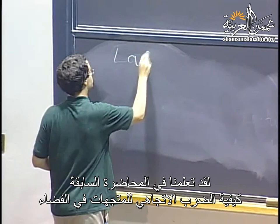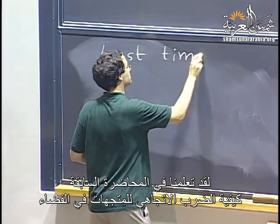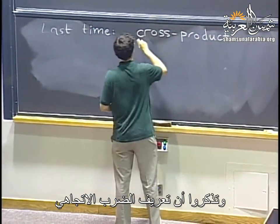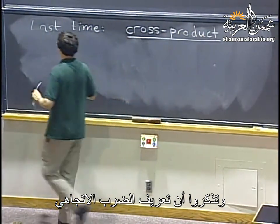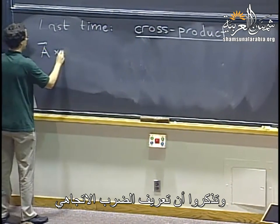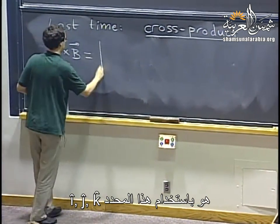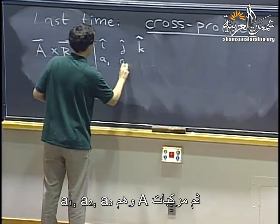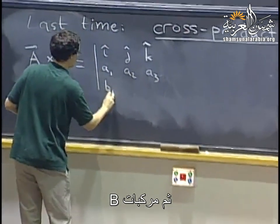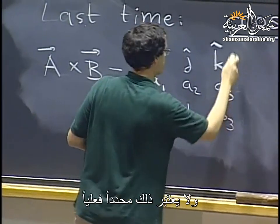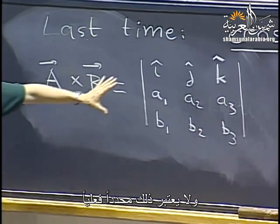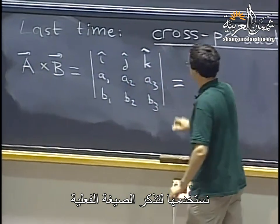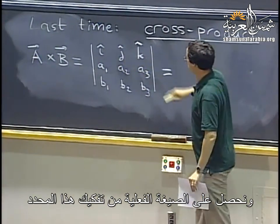So remember last time, we learned about the cross product of vectors in space. The definition of cross product is in terms of this determinant: i-hat, j-hat, k-hat, and then the components of a — a1, a2, a3 — and then the components of b. This is not an actual determinant because these are not numbers, but it is a symbolic notation to remember what the actual formula is, obtained by expanding the determinant.